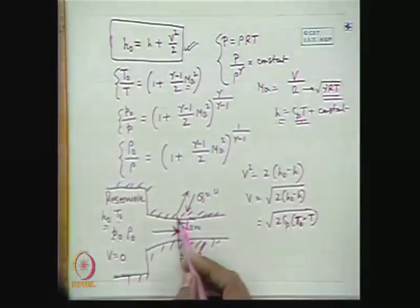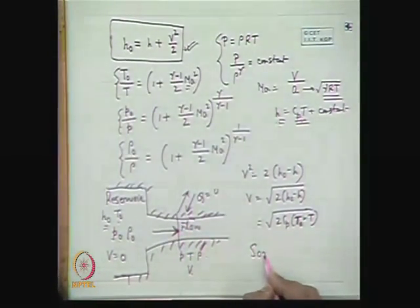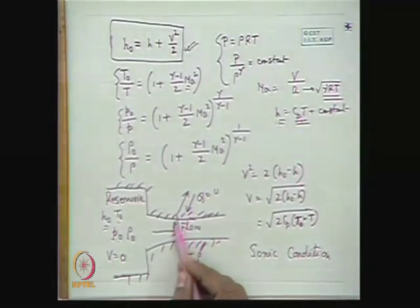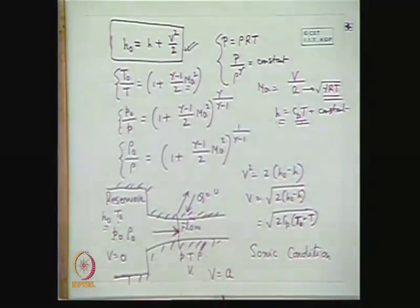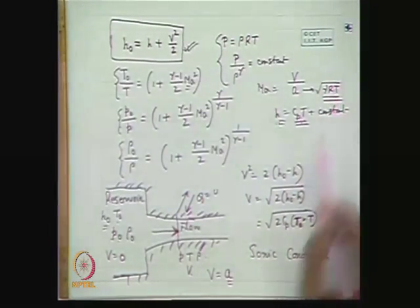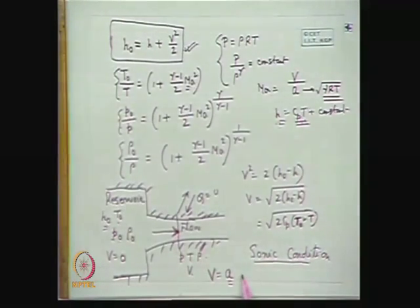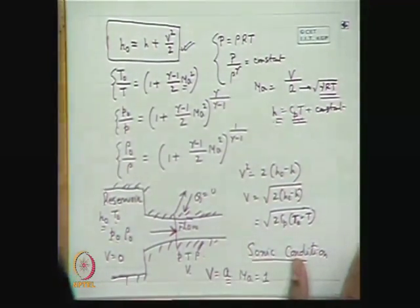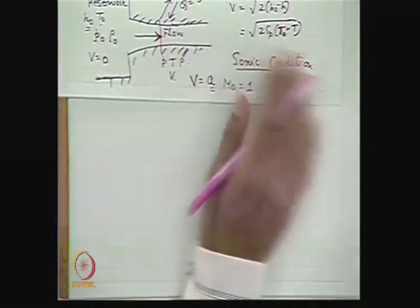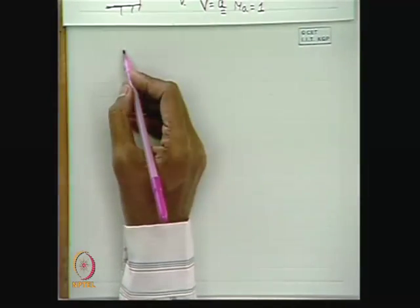Another very important condition in isentropic flow is the sonic condition. The sonic condition means that at some section in the duct, the flow velocity becomes equal to the acoustic speed (speed of sound) at that section, corresponding to the local properties P, T, ρ. The velocity of sound is √(γRT). The section where V equals the local acoustic speed A is the sonic condition, where the Mach number equals 1. Sections where sonic conditions are achieved have properties conventionally denoted with an asterisk superscript.